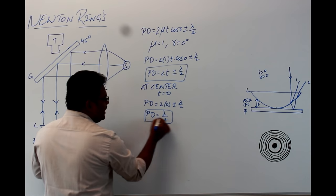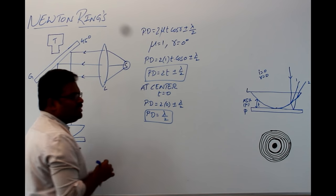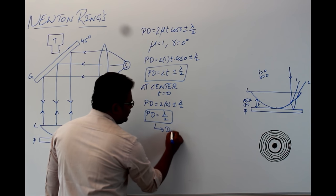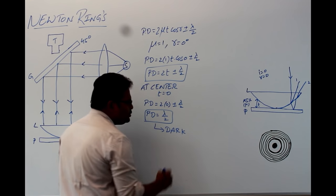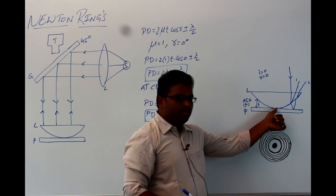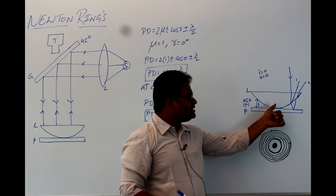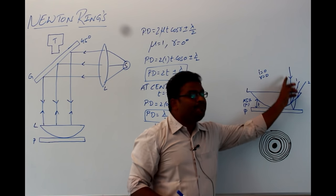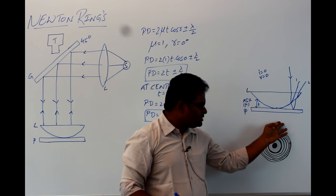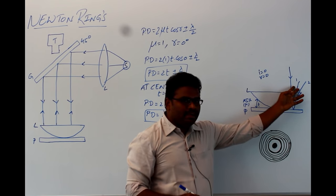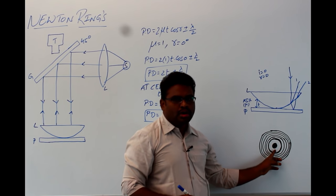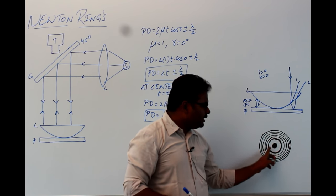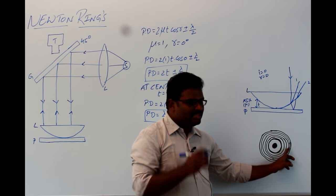If the path difference is λ/2, one gets a dark fringe. That is why the centre of Newton's rings in the reflected case is dark, and after that we have alternating bright and dark rings.